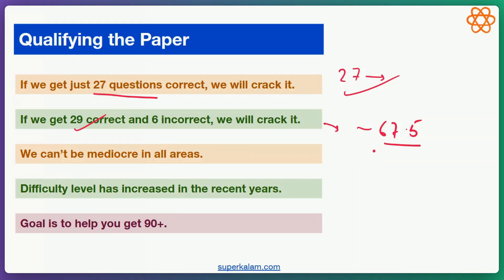So CSAT is not that tough, but you cannot afford to be mediocre in all areas. We have three areas: reading comprehension, mathematics, and logical reasoning. You can't be average in all three — you have to be good at at least one of them. You have to be in a position where you can say there is an 80 to 90% chance that I will be able to solve a question from this area.